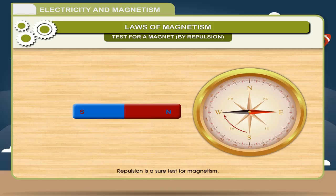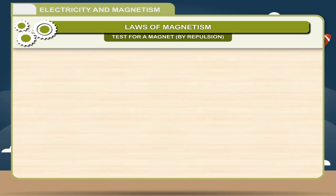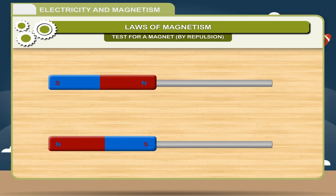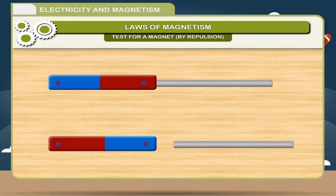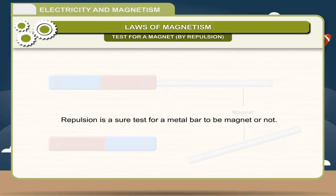Repulsion is a sure test for magnetism. Activity: Take a metal bar. Bring one pole, north or south, of a magnet near the ends of the metal bar one by one. If both ends of the magnet attract, the metal bar is not a magnet. If one end attracts and the other end repels, the metal bar is a magnet. Thus, repulsion is a sure test for a metal bar to be a magnet or not.